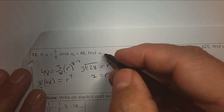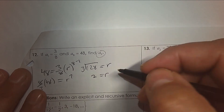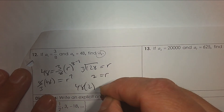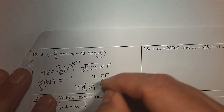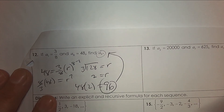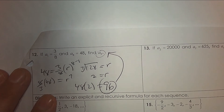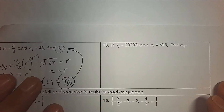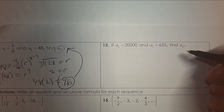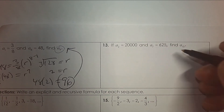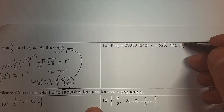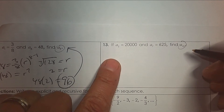So if I want to find the 9th term, I just go 48 times 2, and 96 would be the 9th term. The 8th term is 2,000 — wait, 20,000 — and this one is 625. Find the 10th term, so I need to know the common ratio.